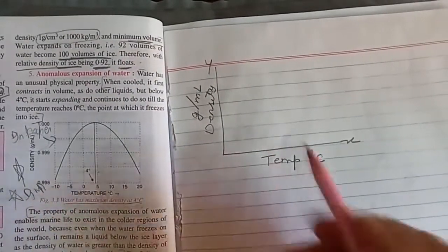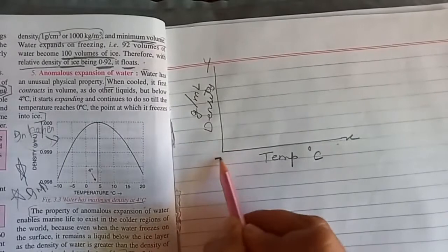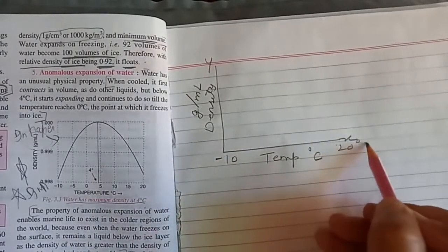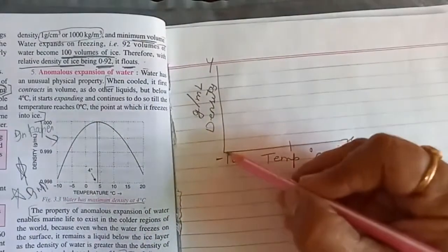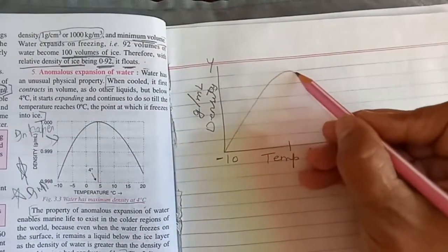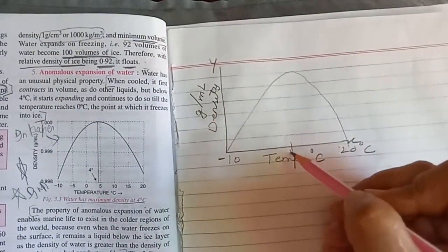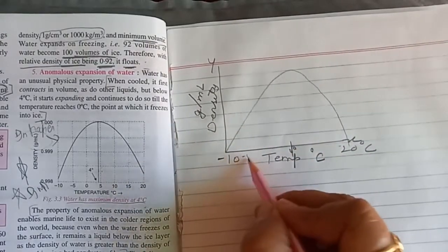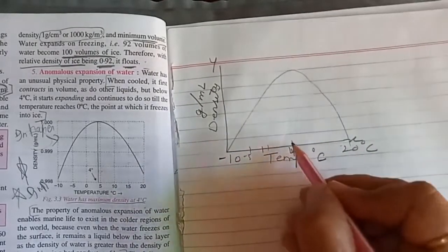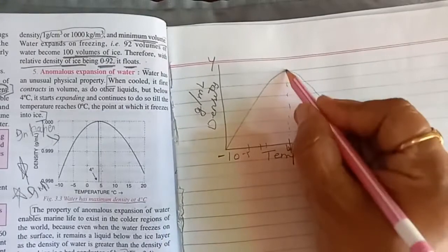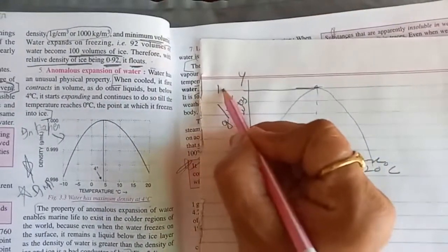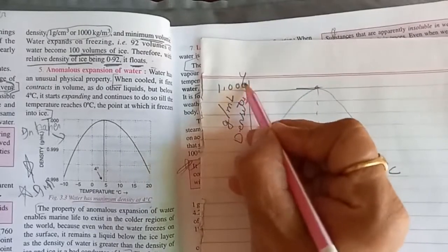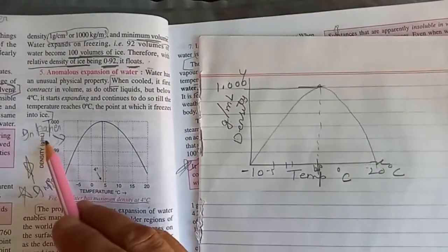The temperature is taken from minus 10 to 20 degrees Celsius. At 4 degrees Celsius, you see the density of water is maximum. This density is 1.000 grams per milliliter, as mentioned here.